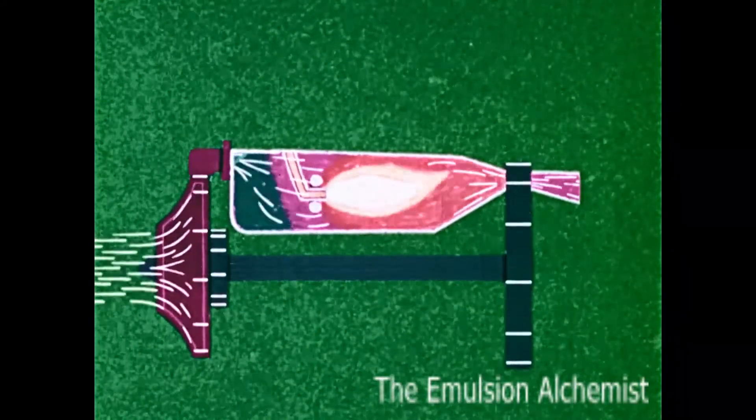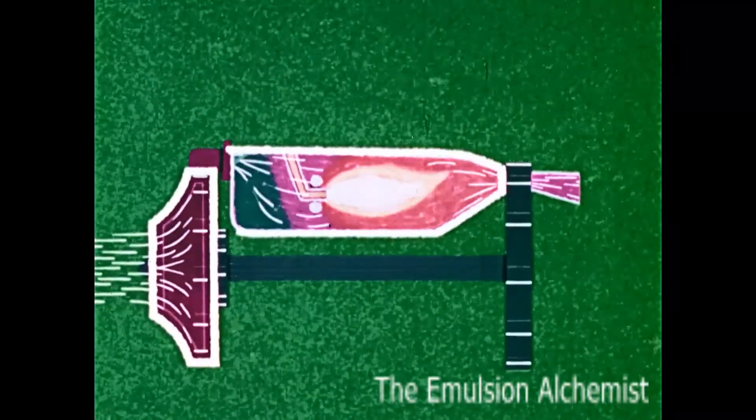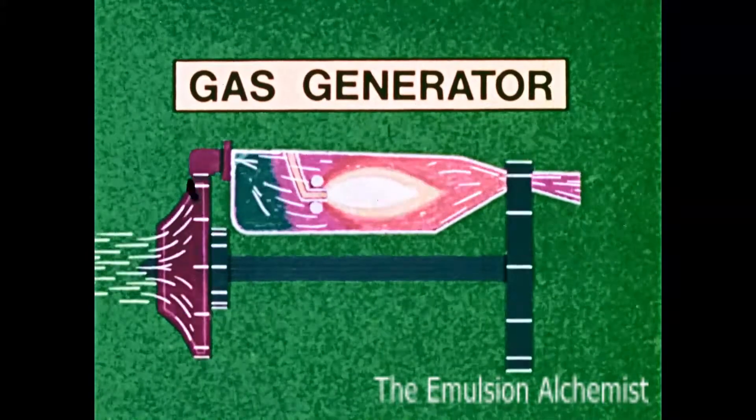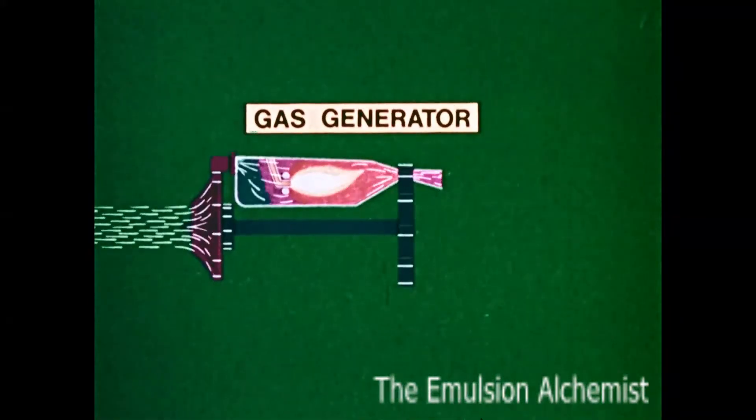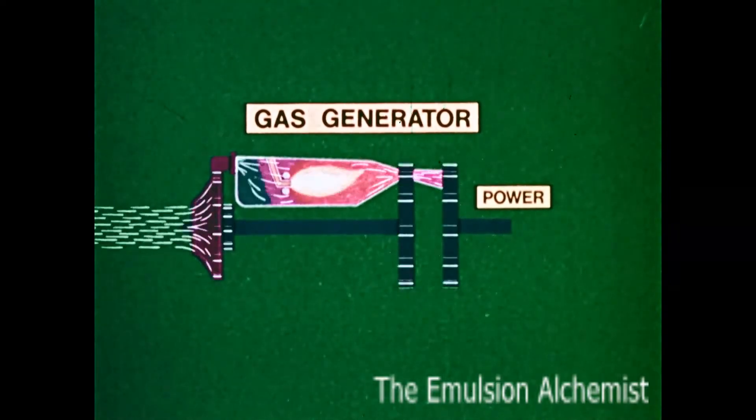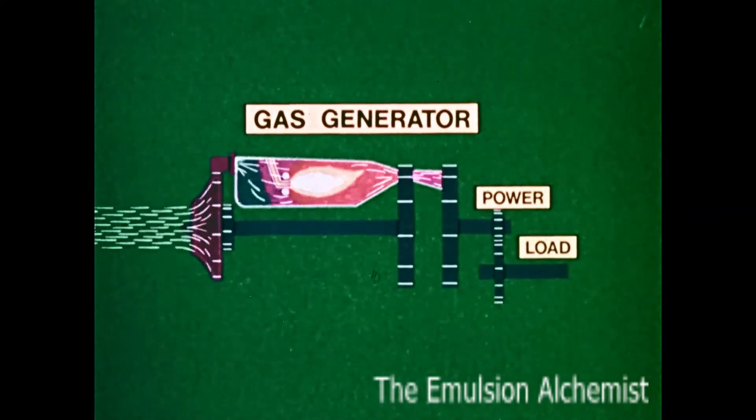The basic components are the usual compressor, combustion chamber, and turbine. This system is called the gas generator. In addition, there is a separate power turbine or free turbine driven by the gases leaving the gas generator system. A speed reduction gear drives the load shaft.